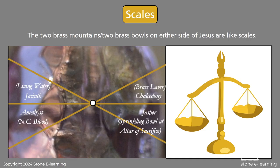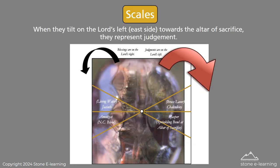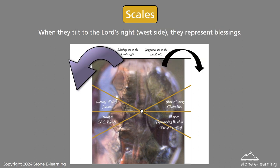The two brass mountains, or two brass bowls, on either side of Jesus are like scales. The Lord is the center of all the scales. Everything radiates from him. When they tilt to the Lord's left, the east side, towards the altar of sacrifice, they represent judgment. When they tilt to the Lord's right, the west side, they represent blessings.